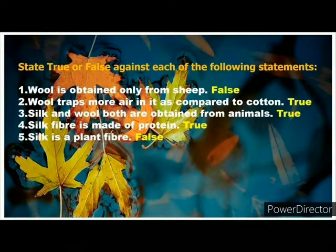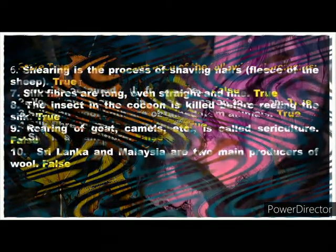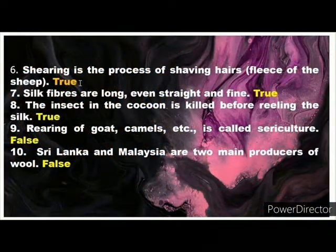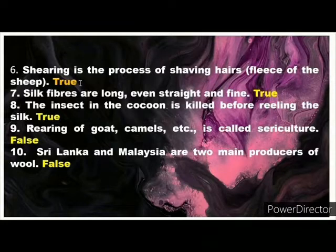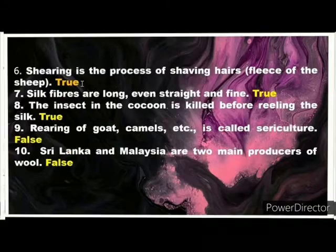Wool traps more air as compared to cotton — True. Silk and wool both are obtained from animals — True. Silk fiber is made of protein — True. Silk is a plant fiber — False. Shearing is the process of clipping hair from the sheep — True. Silk fibers are long, even, straight and fine — True. The insects in the cocoon are killed before reeling the silk — True. Rearing of goat, camel, etc. is called sericulture — False. Sri Lanka and Malaysia are two main producers of wool — False.